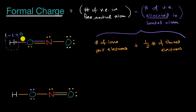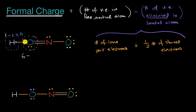What about this oxygen? The number of valence electrons in a free, neutral oxygen is six. The bonded atom has two lone pair electrons, and then it gets half of the shared electrons — one from this bond, one from that bond, and one from that bond — giving five allocated electrons total. So six minus five equals positive one. The formal charge on this oxygen atom in this configuration of nitrous acid is positive one.